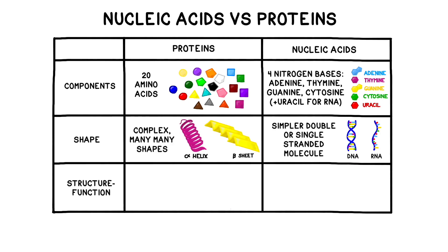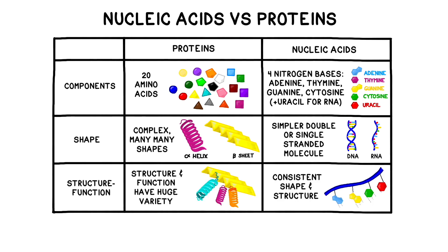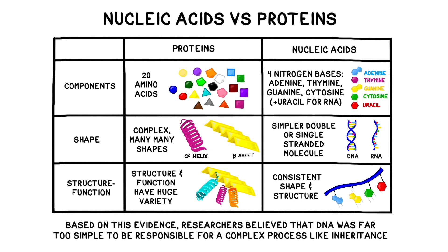DNA is almost always the same shape, whereas proteins have an endless variety of structure and size. Protein structure is always closely tied to their function, and changing the structure often disables the protein. At the time, researchers believed that DNA was far too simple to be responsible for a complex process like inheritance.